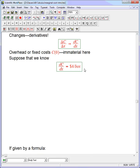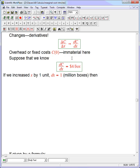So if we increased x by one unit, in other words dx equals 1, and remember that's a million boxes here, then this is the simplest interpretation of the derivative: then C will increase, because this is a positive number, by 4 units, or in other words $4 million.